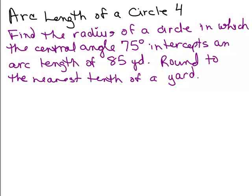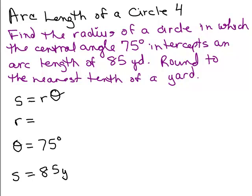So again, we know that the formula for arc length is r theta. But remember, theta must be given in radians. So let's see. We don't know the radius, that's what we're looking for. What about theta? Well, we've got 75 degrees. And what about S? That's 85 yards.